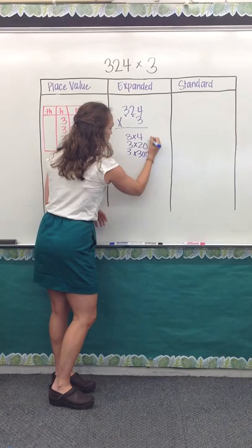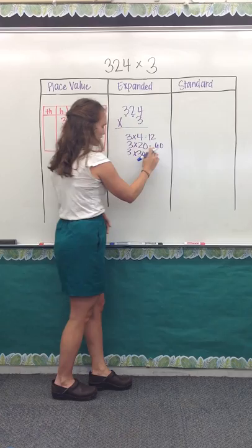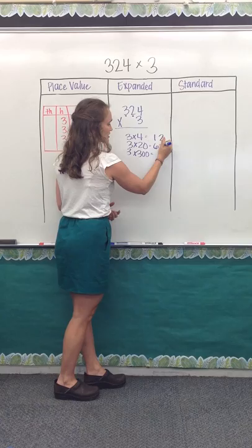Now, the only tricky part about this way of doing it is lining up their place values. So oftentimes kids want to put a 12 right here, and they put a 60 over here, but they're not lined up, and so they tend to do the addition incorrectly. So we want to make sure that they're lining up their place values correct.